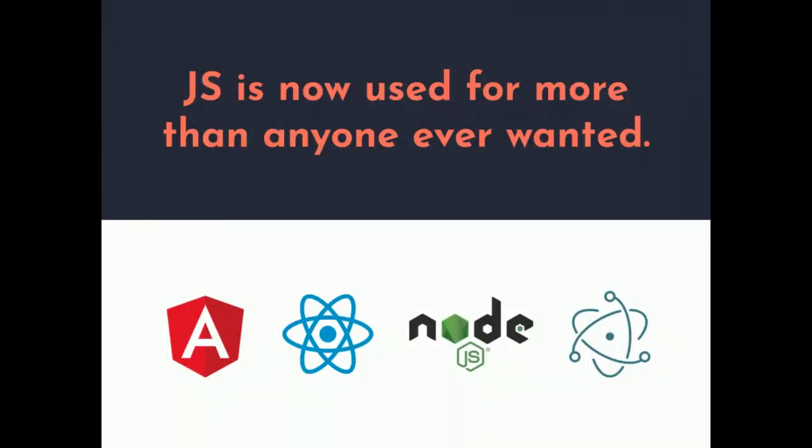JavaScript is definitely no longer just used for pushing web pixels around or doing click callbacks in a website. It's probably used now for more things than anybody ever wanted it to. With the rise of single page application frameworks like Angular and React, we're building full-fledged front-end applications with very rich user interactivity. With Node.js, we're now building back-end APIs and server-side applications. And now with GitHub's Electron framework, we can build browser-based desktop applications as well in JavaScript.